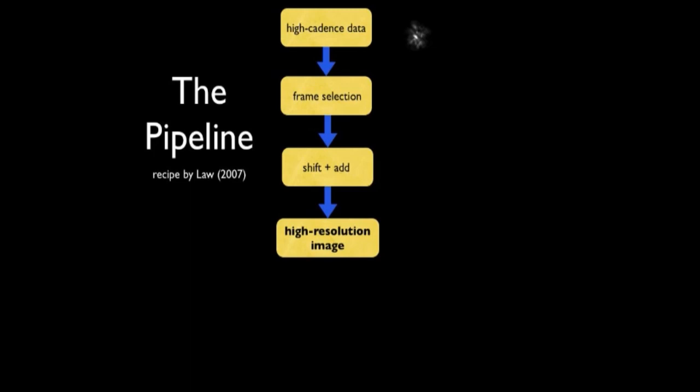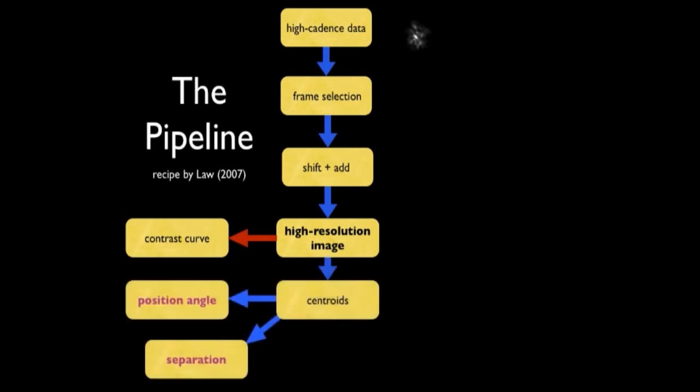And that leads to a high-resolution image. Now, if I only see one star in the high-resolution image, well, then I'm pretty much done. I make a contrast curve out of that, and that's the result from that data set. If I see two stars clearly separated in the lucky imaging, and I can do simple centroiding analysis, just measuring the positions of the stars, then I can directly measure the position angle and separation just using the centroids.